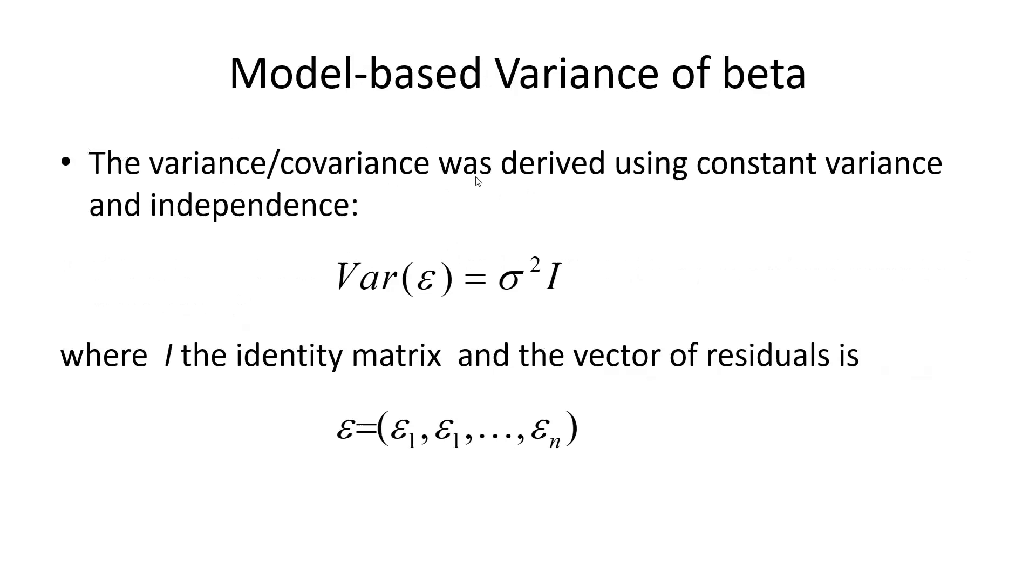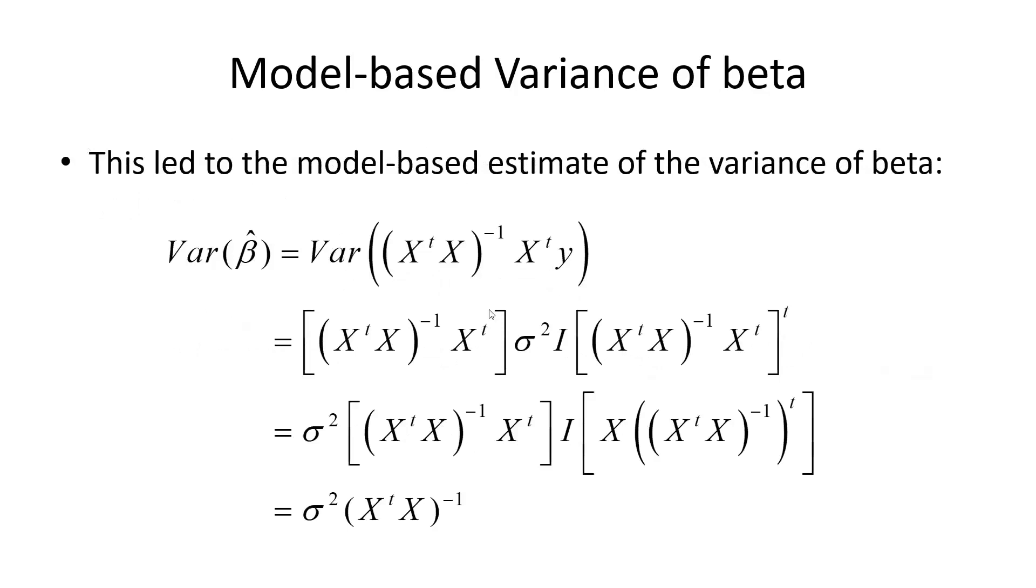The variance covariance was derived using the constant variance and independence. So we had a variance covariance structure with the assumption sigma squared times I, where I is the identity matrix. And that led to a beautiful simplification of the formula.